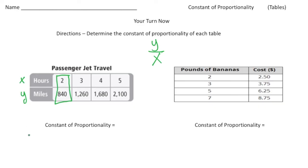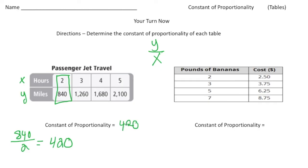The y value is 840, so it's going to be 840 divided by 2. When I do 840 divided by 2, that's 420. So the constant of proportionality of this table is 420 — really it's 420 miles for every one hour, because remember, unit rate has to have a 1 in the denominator.